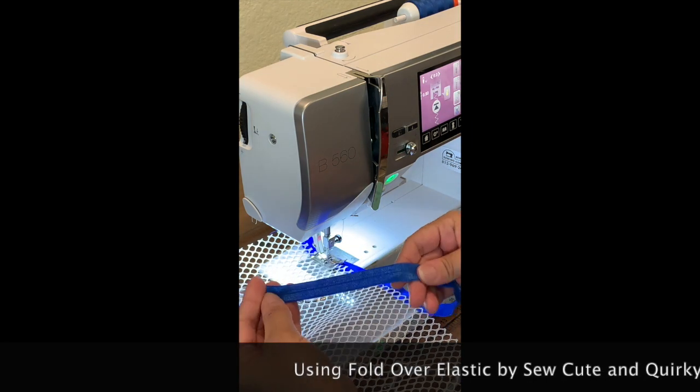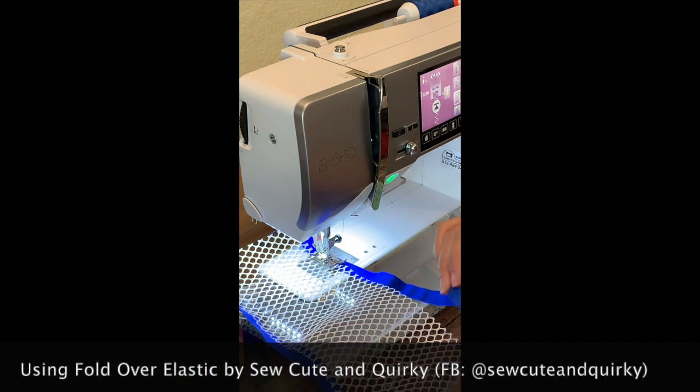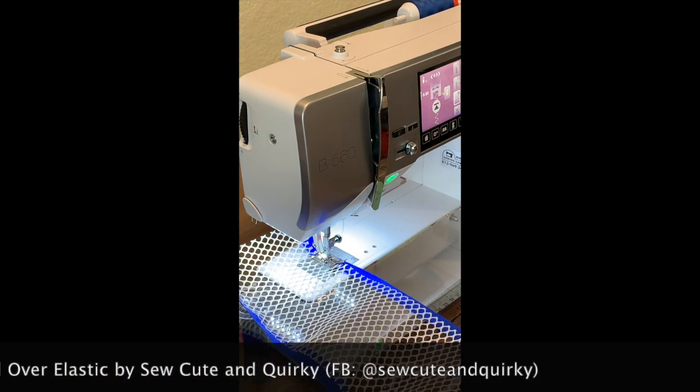It is shiny on one side and flat on the other. The one I'm using is 5/8 of an inch and I'm using it with mesh.